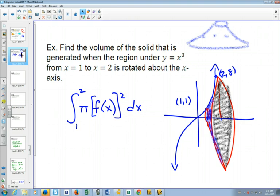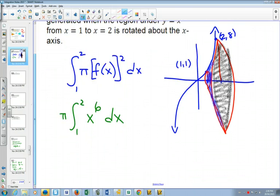Okay. So at this point, we know what our function is, so now we can write this from 1 to 2. I'm going to put the pi out here. F of x was x cubed, so this will just become x to the 6th. As far as our integrals go, this is one of our easiest integrals, right?